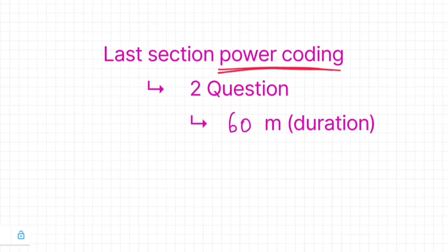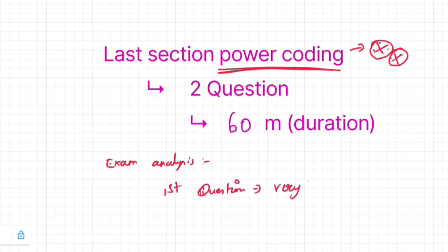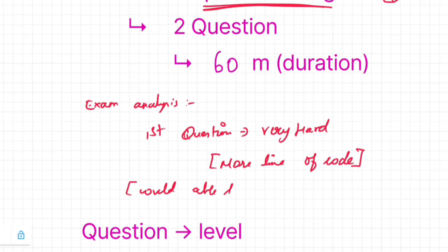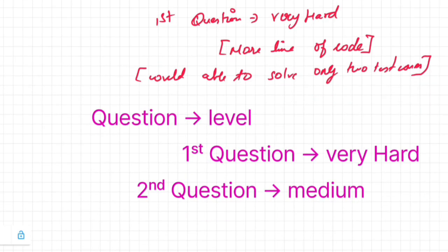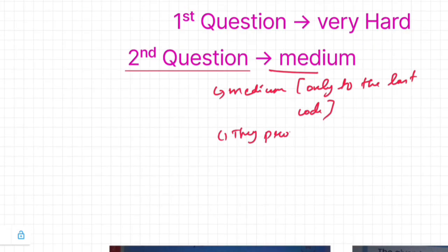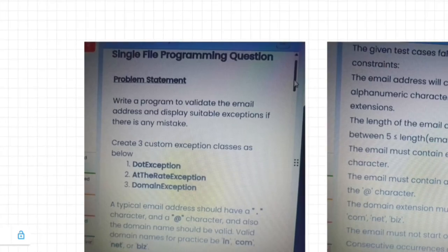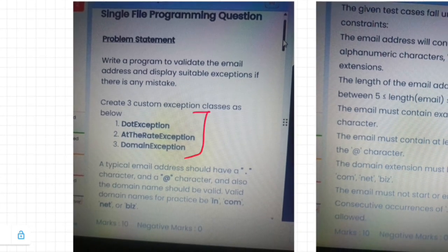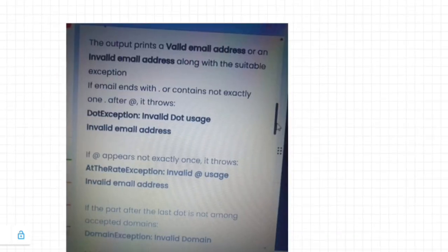Let's discuss the last session, which is Power Coding. I will share important tips to help you crack it. Based on the 14th October analysis, there are two coding questions. The first question is very hard — at least 60 lines of code are needed, and it must be completed within 60 minutes. The second question is medium level, so you can solve it more easily. First analyze which is easy and which is hard and code according to your preference. The power coding question asked on 14th October was to validate an email address and display suitable exceptions — it is a single-file programming language task.